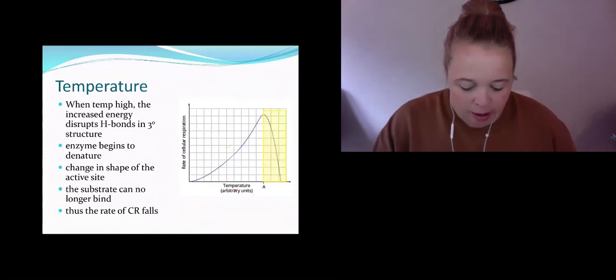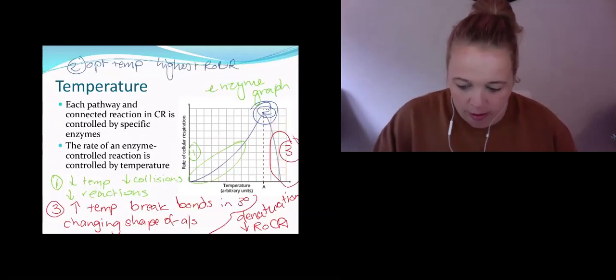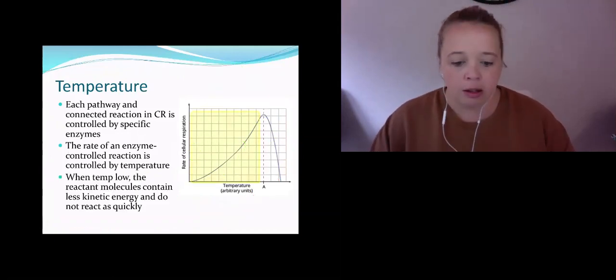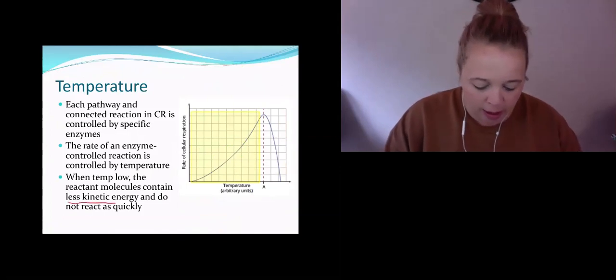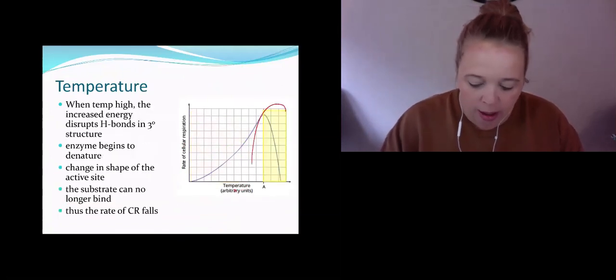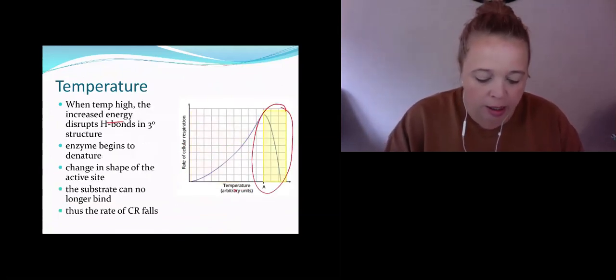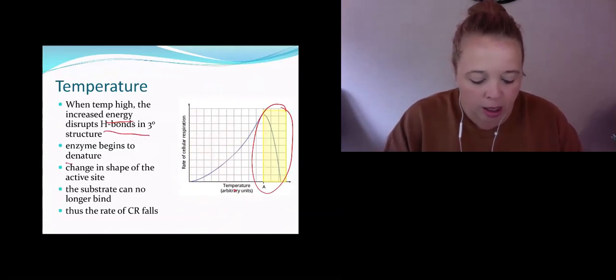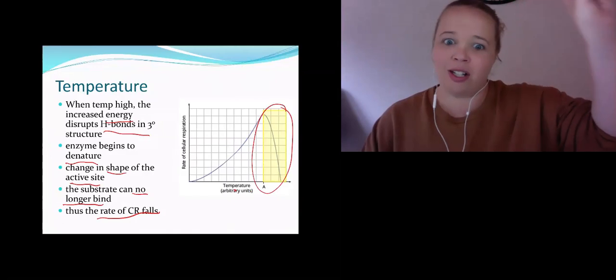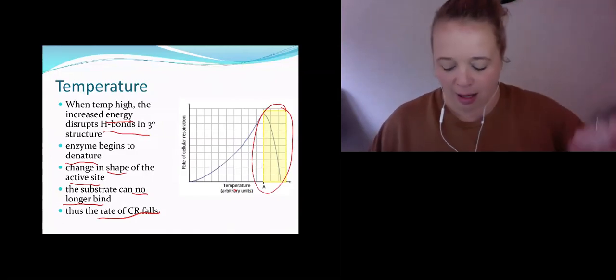So it's exactly the same as all the other enzyme graphs that we've done before. This graph here is going—when the temperature is low, the reactant molecules have less energy and so they don't react as quickly. So that's talking about this section here. When the temperature is high, we get increased energy disrupting the bonds in the tertiary structure. These are good questions because they're the same in cellular respiration, they're the same in photosynthesis, and they're the same in enzyme concentration.